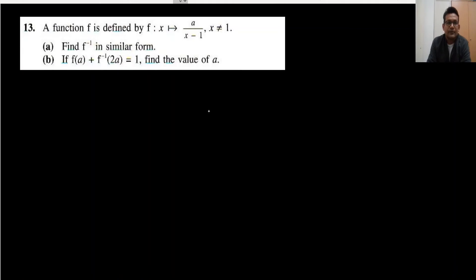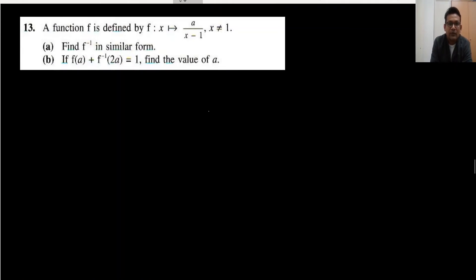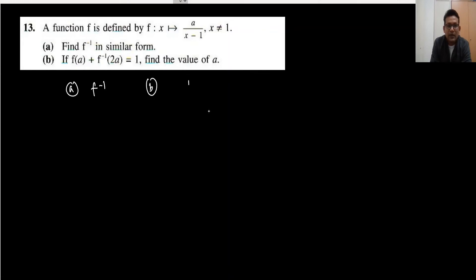Question number 13. The function f(x) = a/(x-1) is given, where x ≠ 1. We need to find f⁻¹, and the condition is f(a) + f⁻¹(2a) = 1. We then find the value of a.